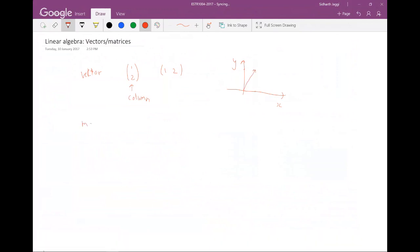What is a matrix? A matrix is in some sense a generalization of a vector. So for example, here is a 0, 1, 1, 0 matrix. This is a 2 by 2 matrix because it has two rows and two columns.